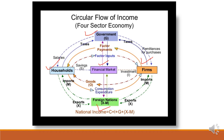We can take an example of any two sectors. Suppose there are only two sectors in an economy: one is household sector and the second is producer sector. The household sector gives its services to the producer sector as a factor of production — as a landlord, as a laborer, as an entrepreneur, or as a capitalist. All the factors of production come out of the household sector and go to the producer sector, and in return, the producer sector gives money — for example, wages to labor, interest to capitalist, and profit to entrepreneur.